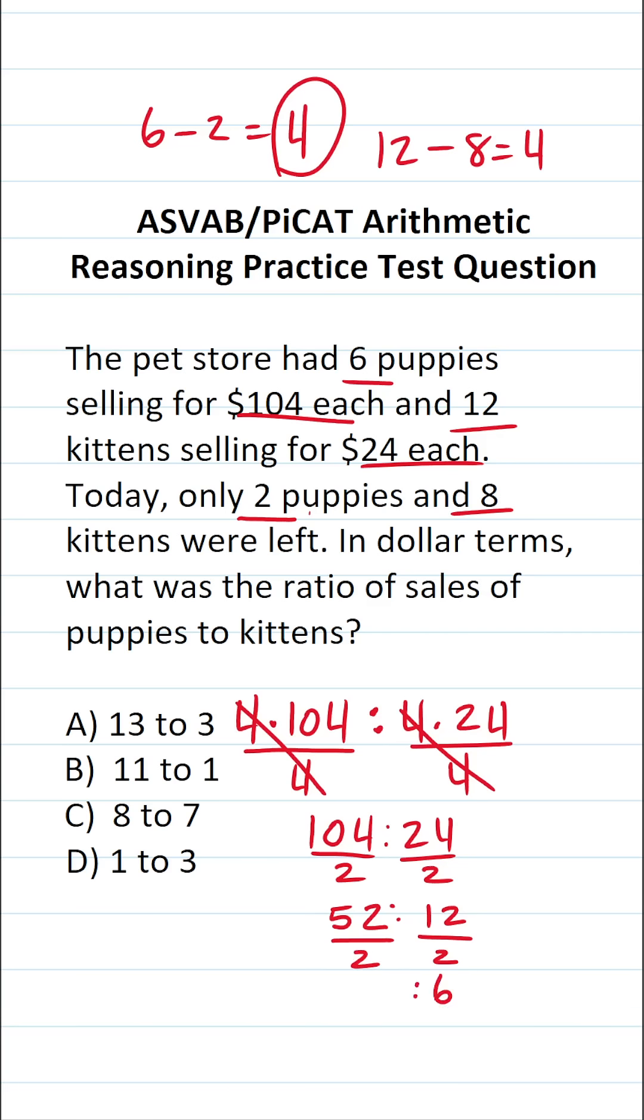52 divided by 2. Again, if you can't do that mentally, always do it off to the side very quickly. Having long division skills is pretty important for this test. 2 goes into 5, 2 times without going over.